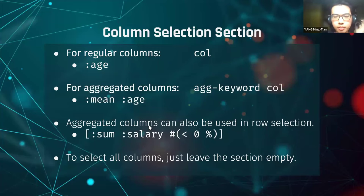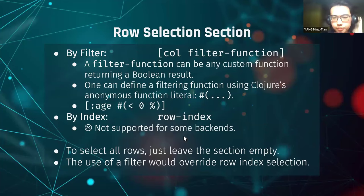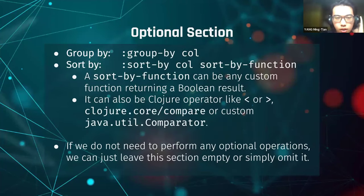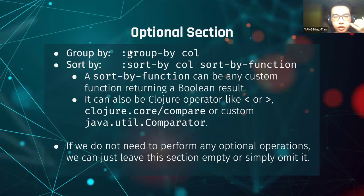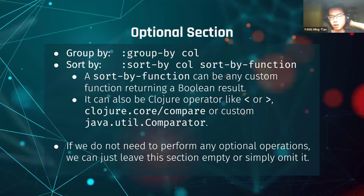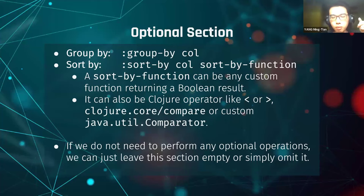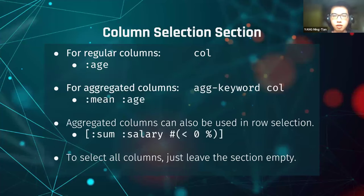To select all columns, just leave the selection empty — same as with row selection. The third section is the optional section, where you can perform GROUP BY and SORT BY operations. Similar to the filter function, the sort-by function can be any custom function returning a boolean. You can also use Clojure built-in operators such as less-than or greater-than. If you don't need optional operations, simply leave this section empty or omit it entirely.